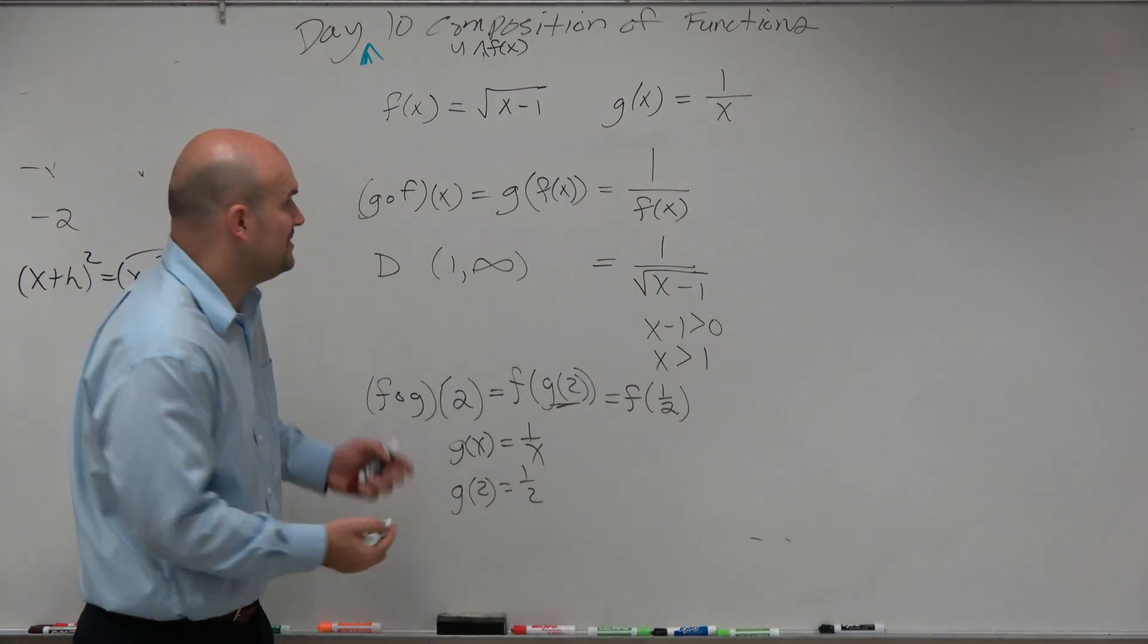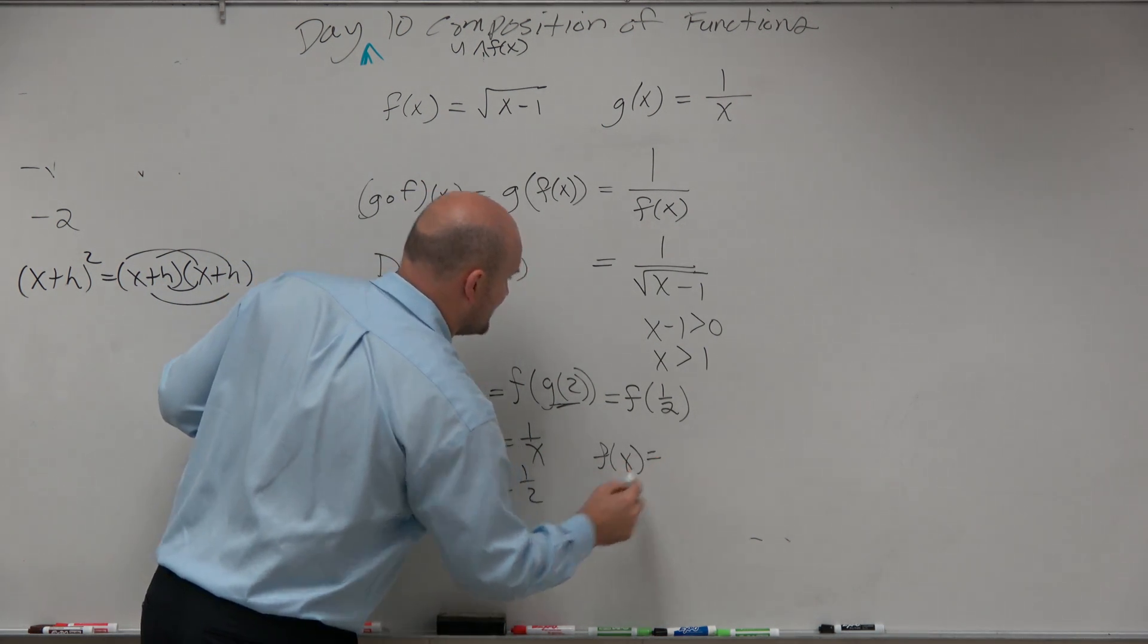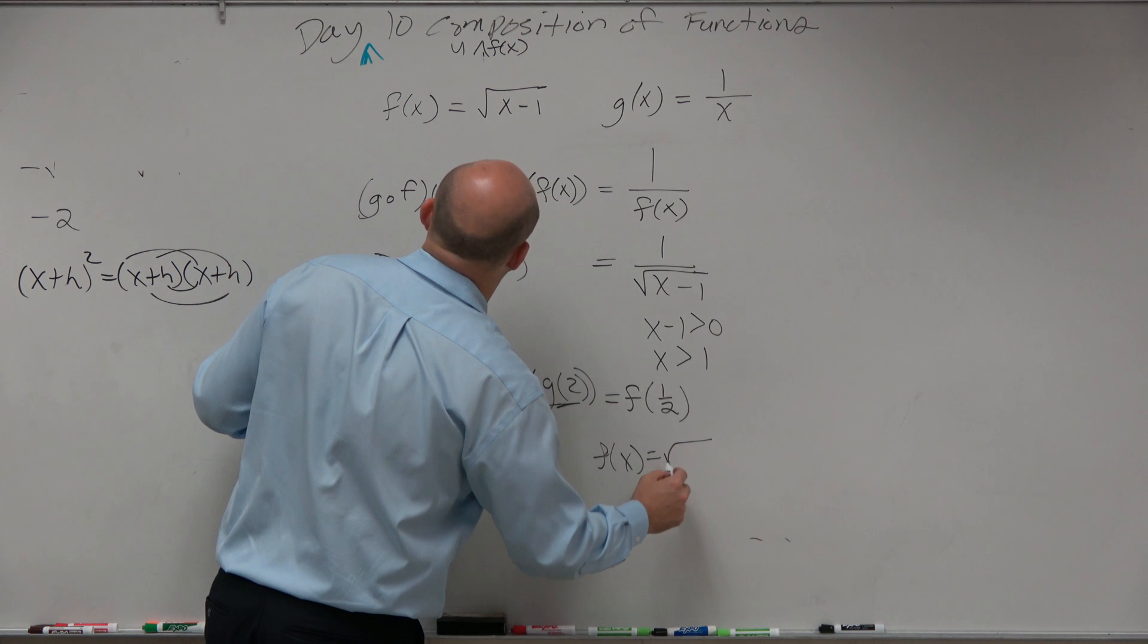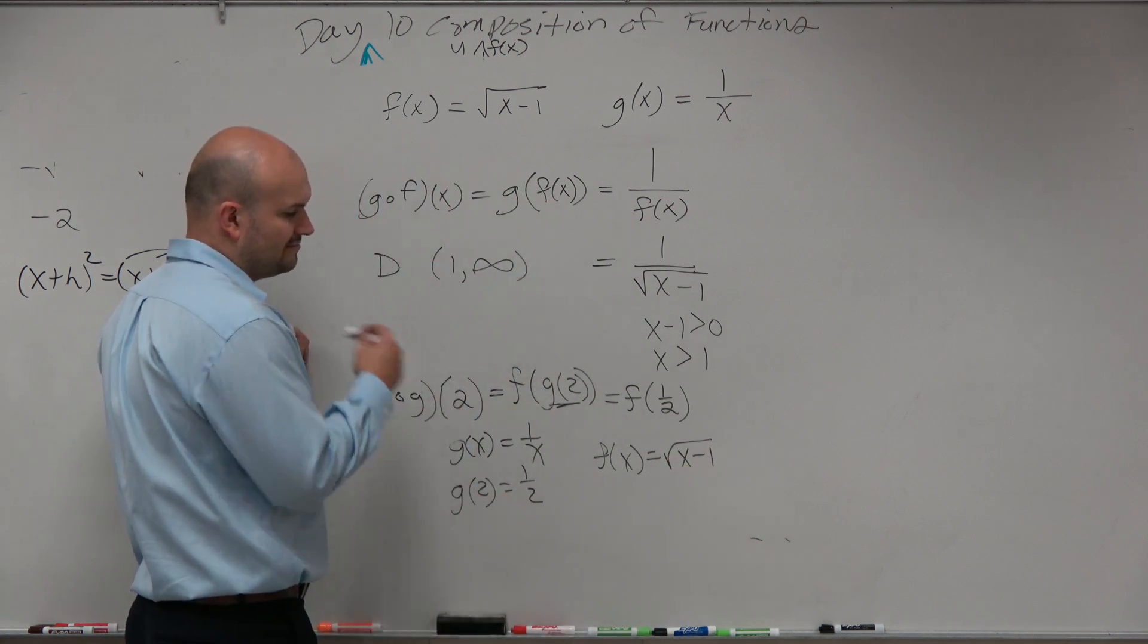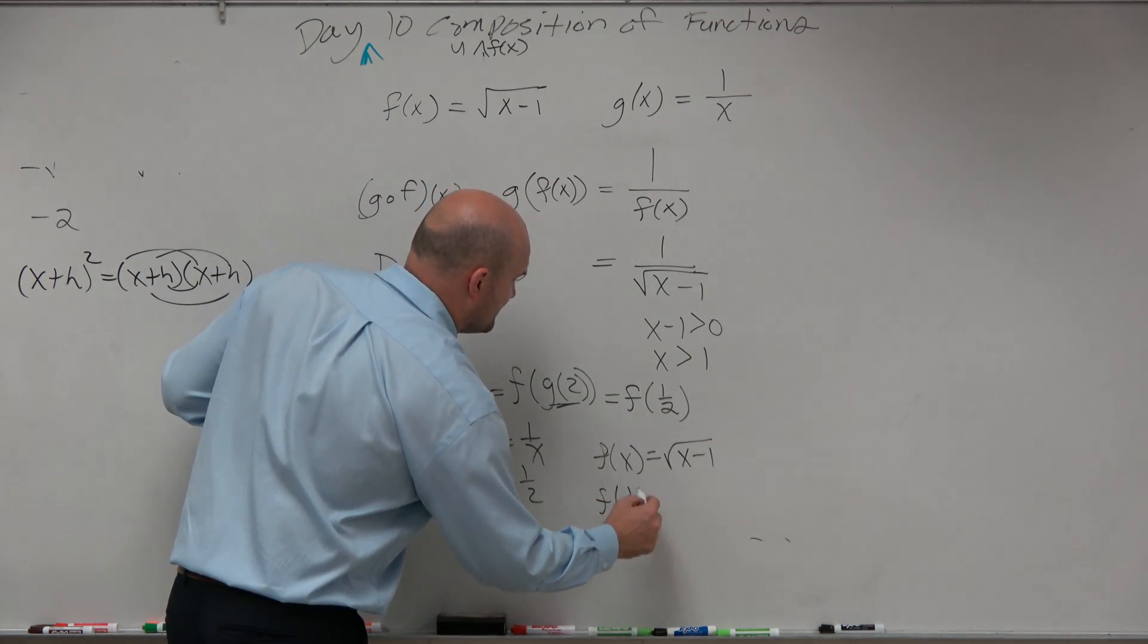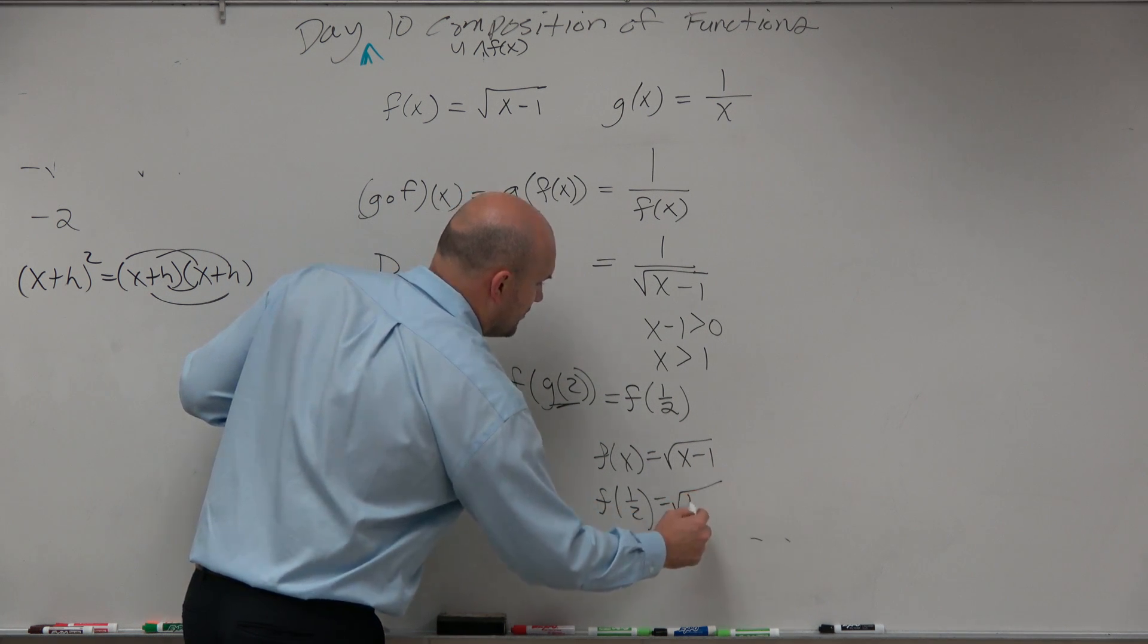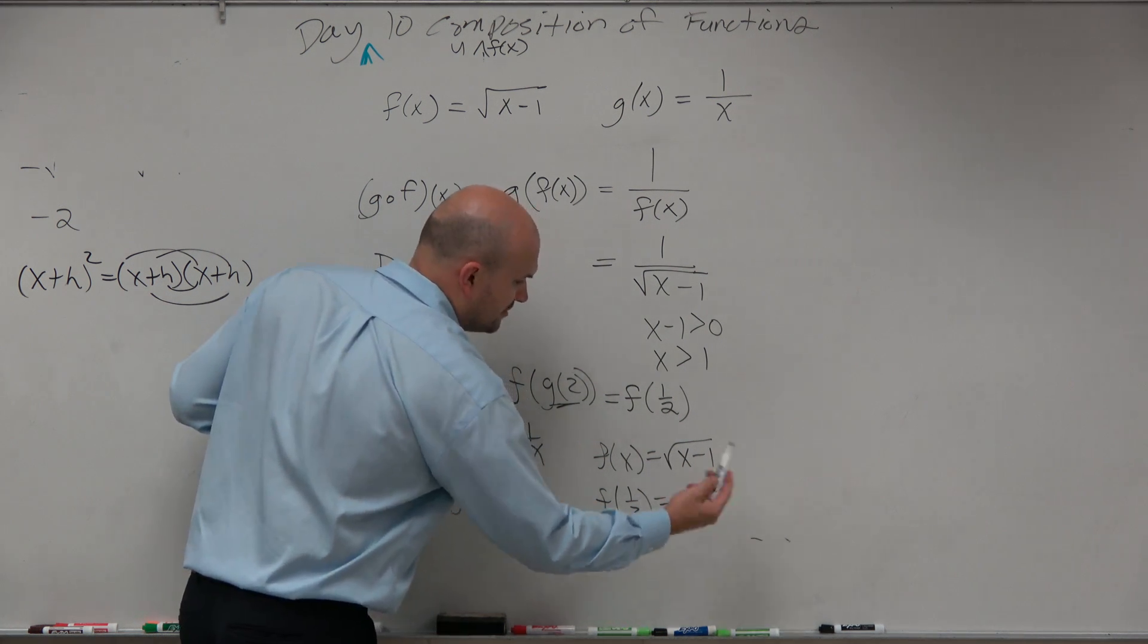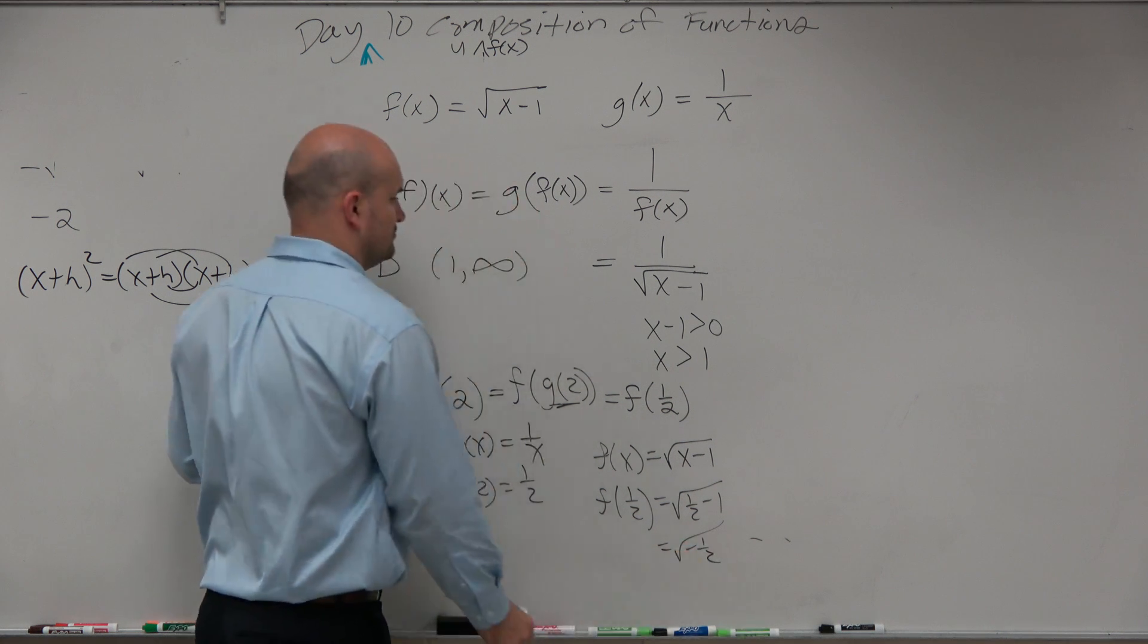And that's not that bad because we have the f of x function. f of x is equal to square root of x minus 1, which is obviously the square root of negative 1 half.